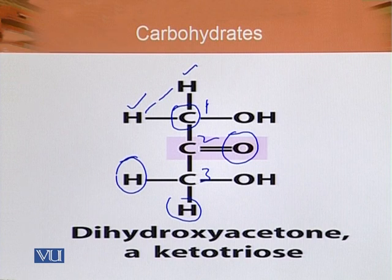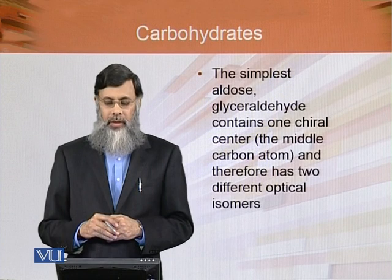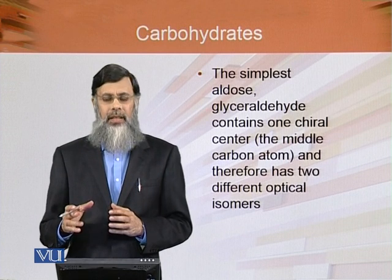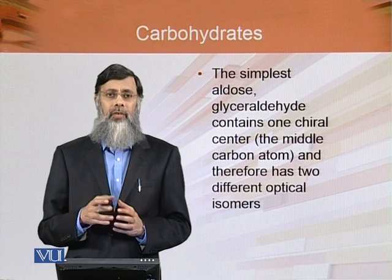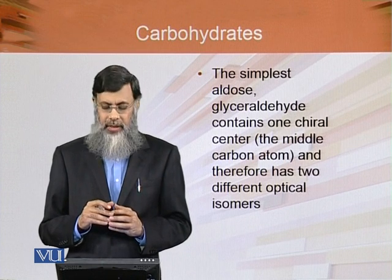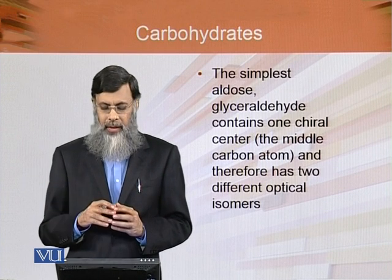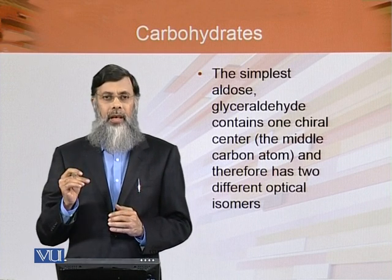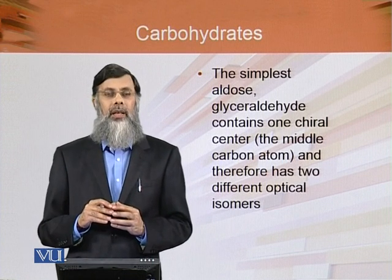Therefore, dihydroxyacetone, which is a keto triose, has no optical activity. It is called 'keto' because it has a ketone group attached, and 'triose' because it has three carbon atoms. The simplest aldose sugar, glyceraldehyde, is an isomer of dihydroxyacetone. It contains one chiral center — the middle carbon atom — which is the one asymmetric carbon atom, giving it two different optical isomers.